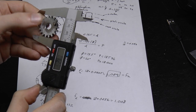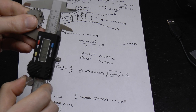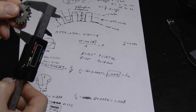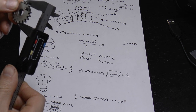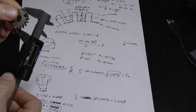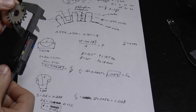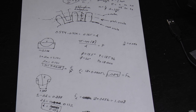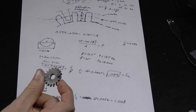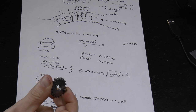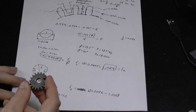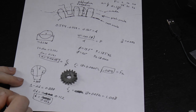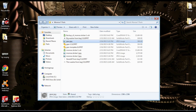Let me double-check these measurements to make absolutely sure I was going across the gear correctly. I have 1.121 for the outside, and 0.888 across the root — as far as I'm concerned that is the correct measurement. Those are the fundamental measurements of this gear, so let's go ahead and model that up in SolidWorks.